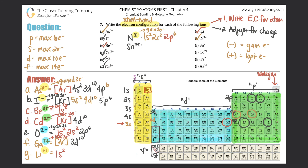I: Sn²⁺. Tin is number 50, down here. Noble gas before it is krypton, so that's Kr. Pick up from number 37 in the 5s category: 5s2. Then at 4d, pass all those boxes: 4d10. Now at 5p, passing 2 boxes: 5p2. Plus 2 charge means lose 2 electrons from the highest principal quantum number — between 5, 4, and 5, you lose from n=5. You always lose from the outside inward, so the 5p2 is removed first. Erase the 5p2.